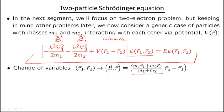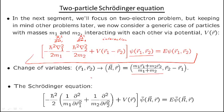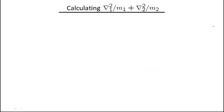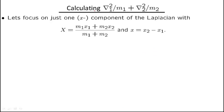We're going to rewrite the equation in terms of capital R and lowercase r. The potential energy depends only on the relative distance by construction. The non-trivial part is the kinetic energy — specifically the Laplacians appearing in the brackets. To calculate the kinetic energy part, we can focus for simplicity on just one component of the Laplacian.